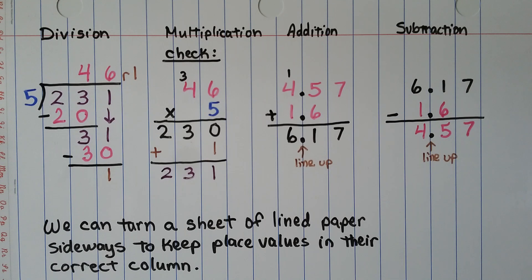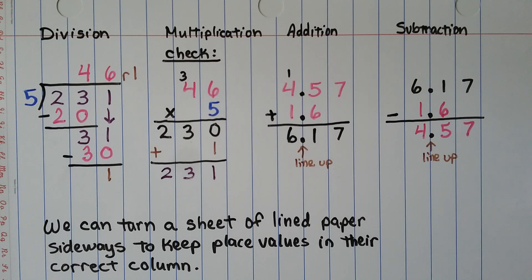It can be very difficult to keep your place values straight and your columns straight when working with decimals. So we can turn a sheet of lined paper sideways to keep the place values in their correct column.